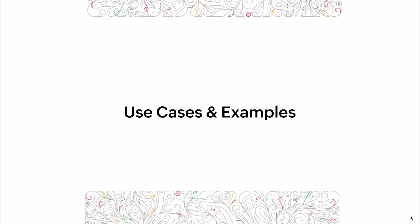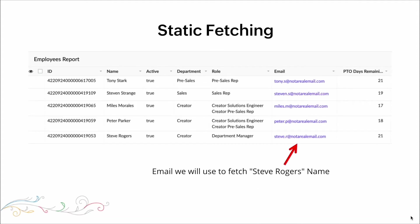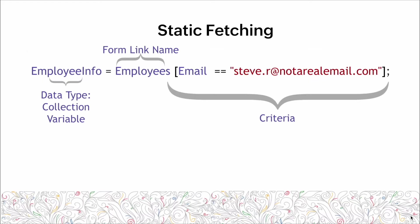Let's look at some use cases and examples. Static fetching. Here's an example of static fetching. We have a table with some records. We're going to use the email and a fetch command to fetch the records for Steve Rogers' name. We have the employee info as our collection variable, employees as our form link name, and for the criteria, we're telling it to fetch any record that has an email value equal to the email address on the screen.